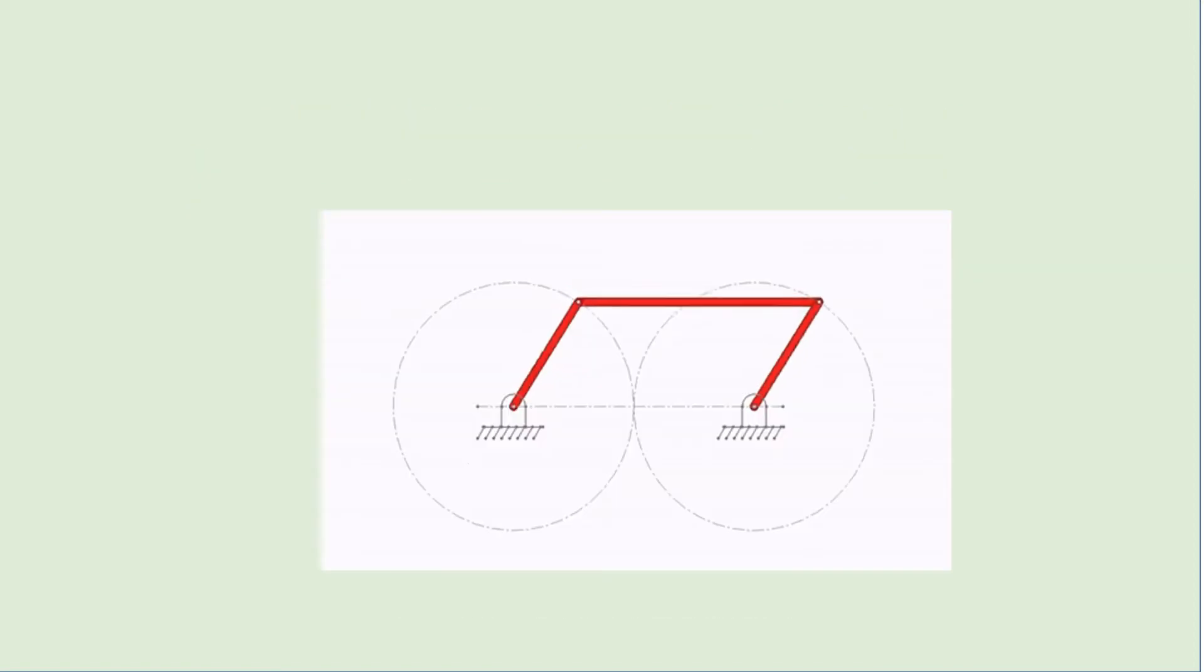A kinematic chain is basically a constrained chain, and to use this chain we have to fix one of its links. As soon as we fix one of its links it will be called a mechanism.